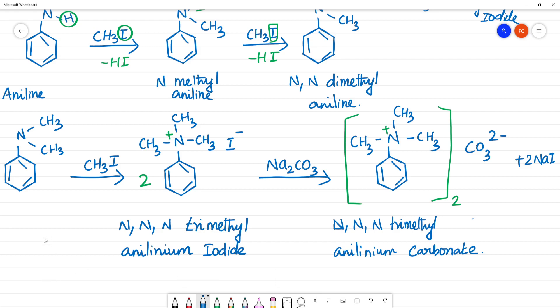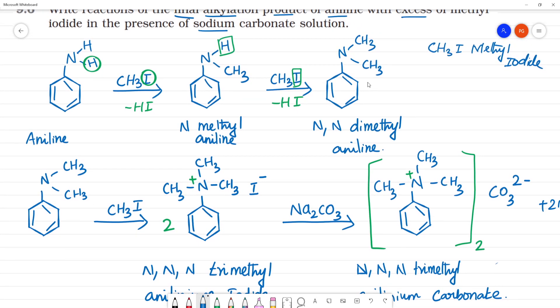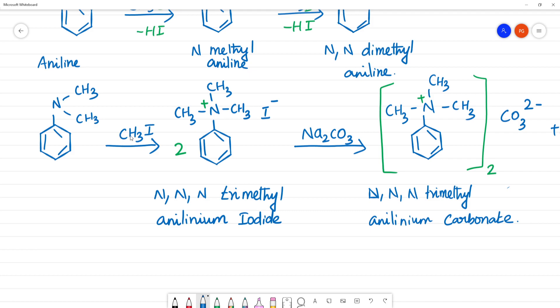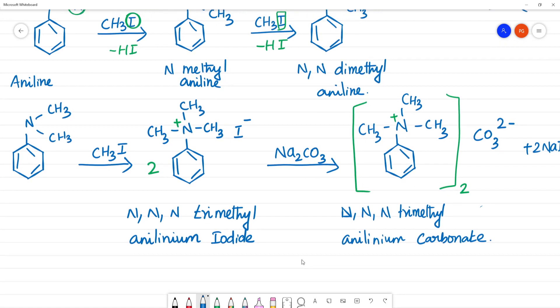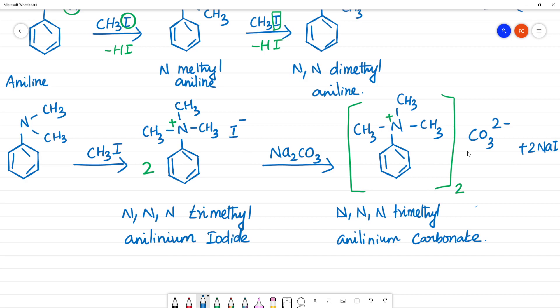So, first one methyl group replaces. First, one methyl group replaces. Next, one methyl group replaces. Next, this is an anilineum ion substituent. What do we do? We replace the I- with CO3 2-.